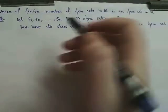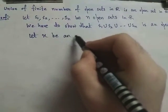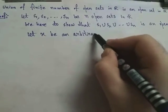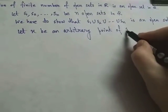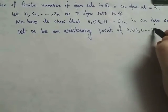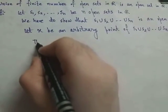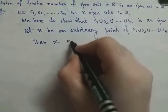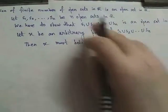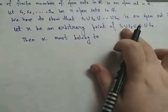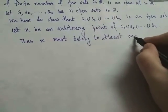To prove this, let x be an arbitrary point of S1 union S2 union ... union Sn. Now x is an arbitrary point of this set, so x must belong to at least one of the sets S1, S2, or Sn, because it is a union. So x must belong to at least one of the sets.